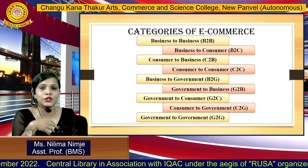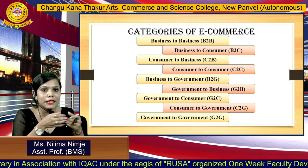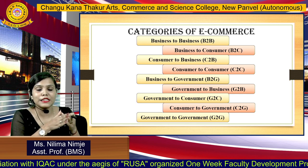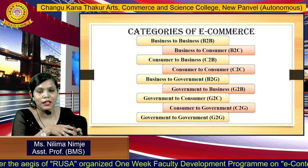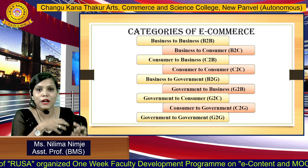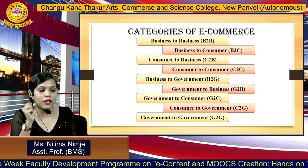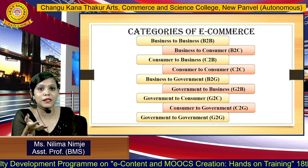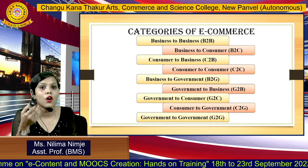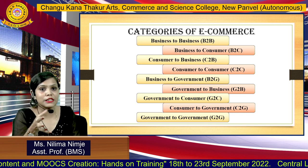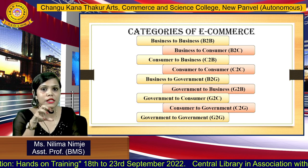Moving towards G2B — Government to Business. Here the government provides solutions and services to businesses. The motive behind the G2B model was to practice paperless transactions and improve communication for smoother and faster business transactions. For example, many businesses use government portals for making online registration of MSMEs or for obtaining licenses.